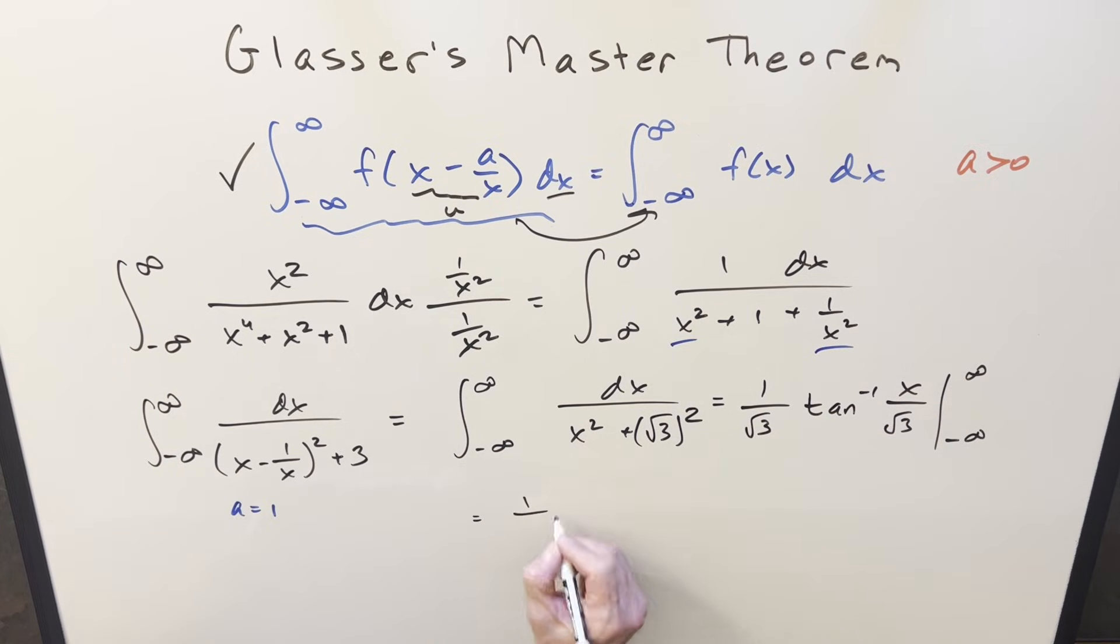I'll factor the 1 over square root of 3 in front. arctan at infinity, that's going to be pi over 2. arctan at minus infinity, that's just minus pi over 2. Minus times minus is plus. Add this together and we just get pi. Putting it together for my final solution, we just get pi over square root of 3 and that's it.